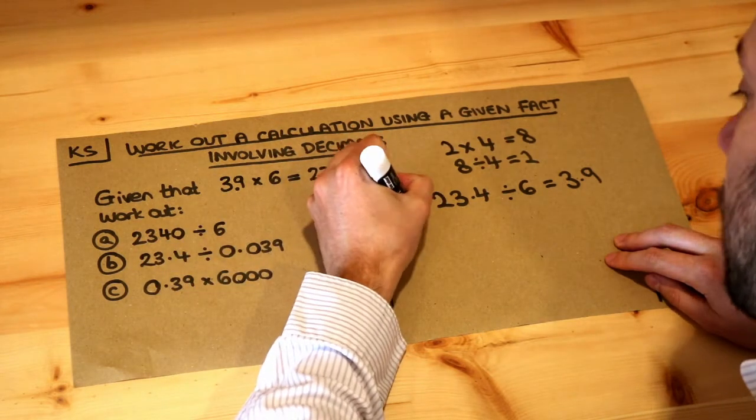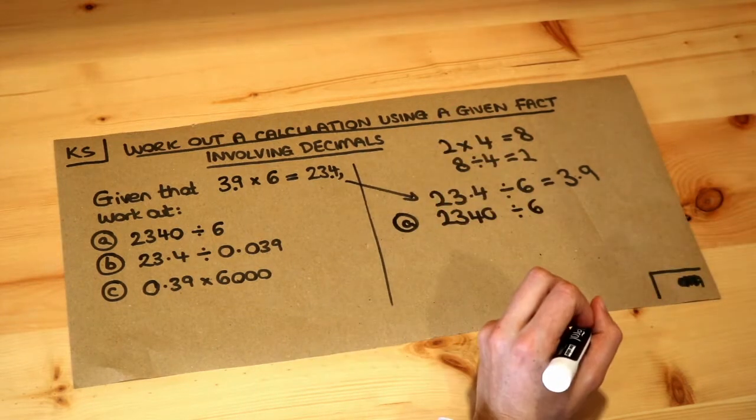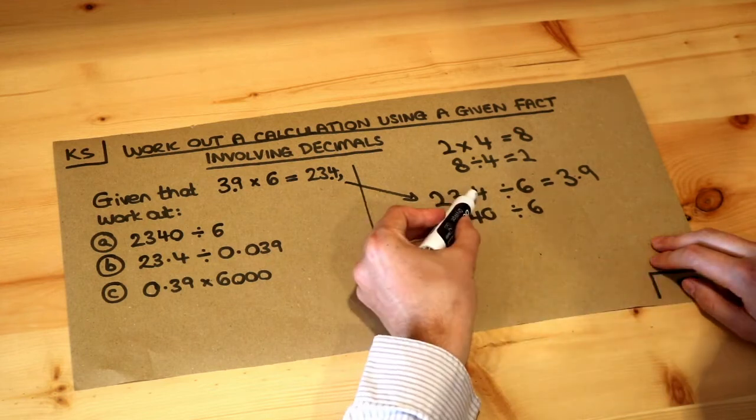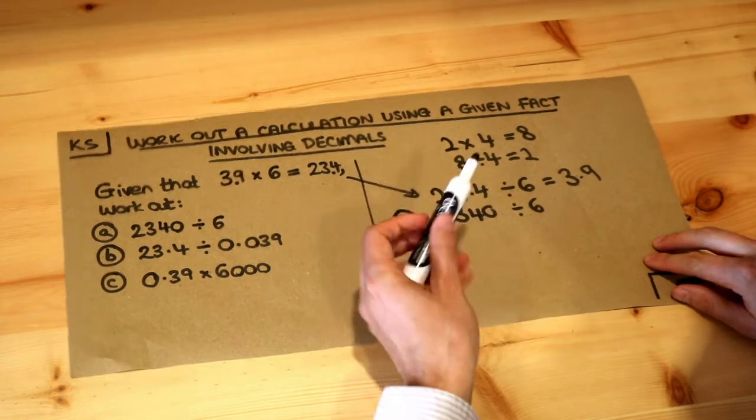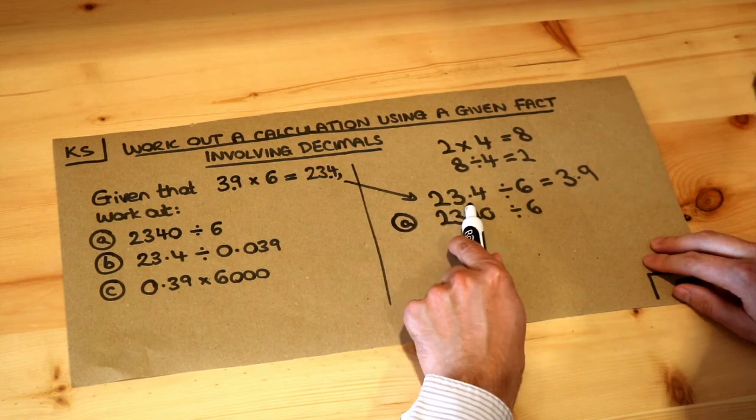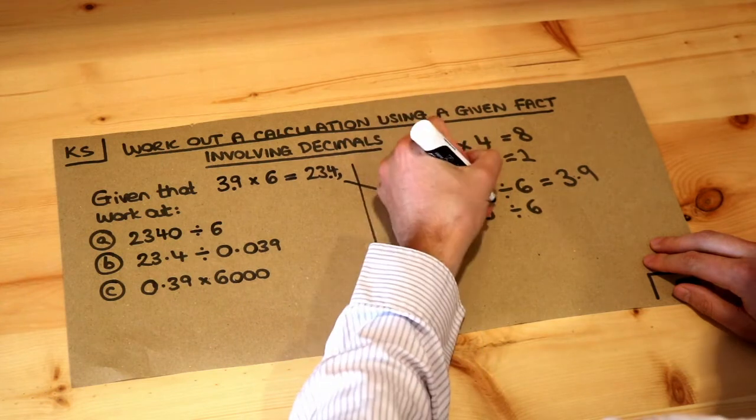So with A, we've got 2340 divided by 6. Now let's compare this to this. Can you see that the decimal point from here to here has moved two places? Because the decimal point is just before the 4, it's moving one, two places. So this is getting 100 times bigger. Times 100.